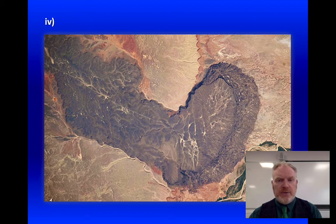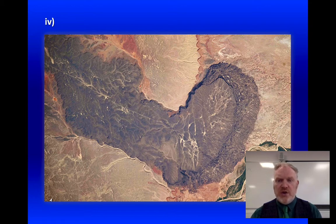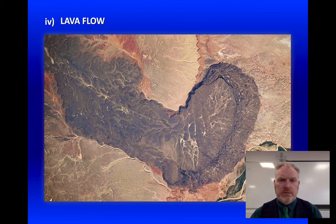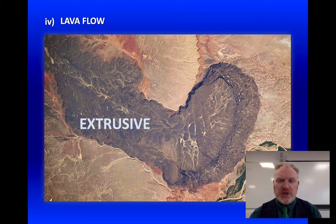Picture number four is a bit different — this time we're looking at a satellite image. We can see the darker coloured igneous rock spread out over the ground surface. We can even see some of the streams and rivers in this area. Because it's at the surface — and we can see around the right-hand edge the rubbly end of this — this is a lava flow. It's extrusive igneous rock, formed after being erupted from a volcano and extruded onto the Earth's surface.